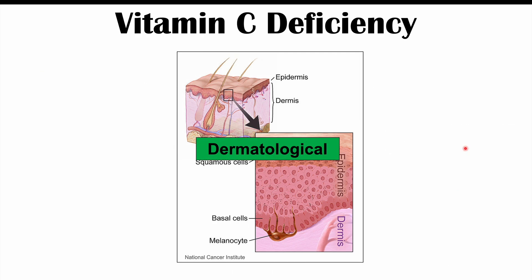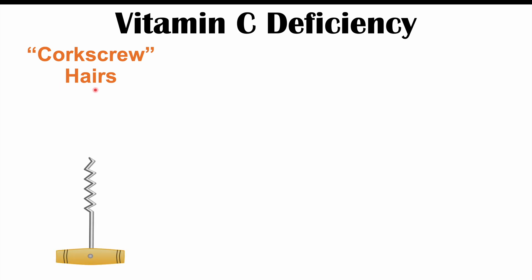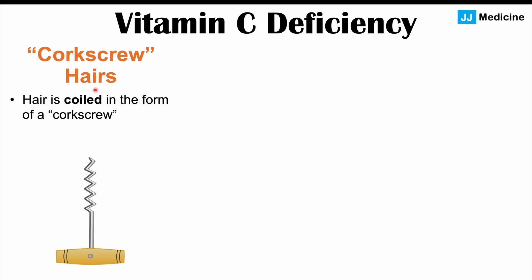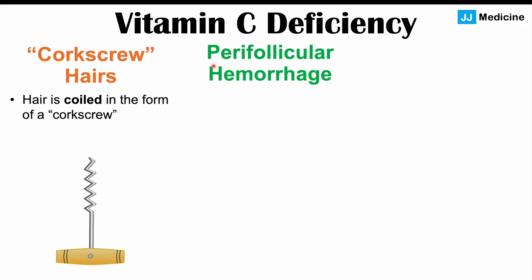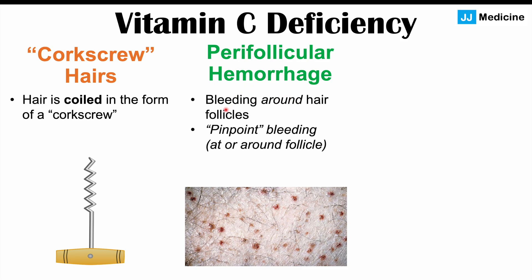The next category of findings is dermatological, involving the skin and hair. In vitamin C deficiency or scurvy, we can see what we would call corkscrew hairs — the hairs become coiled to look like a corkscrew. This occurs because vitamin C is important in collagen and keratin synthesis; with issues in those processes, the hair can lose its proper shape. We can also see perifollicular hemorrhage — bleeding around hair follicles — a pinpoint bleed right at or around the follicle.